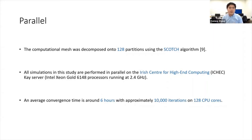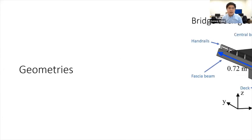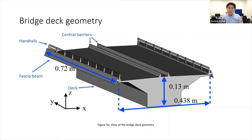Average convergence time is around 6 hours in total with approximately 10,000 iterations on 128 CPU cores. The bridge deck geometry is sketched using the open source software FreeCAD, with the same dimensions as the model used in the wind tunnel test. The deck was first sketched in 2D and then extruded to 3D. Secondary structures — including handrails, central barriers, and fascia beams — are sketched as separate parts, then all combined together to produce STL files.